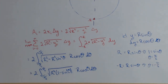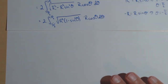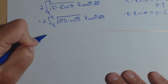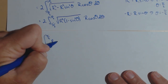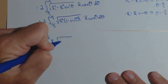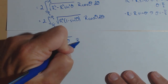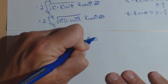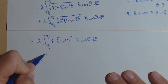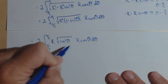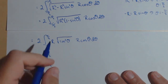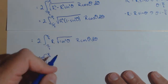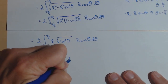Moving to a new sheet: we have 2 times the integral from negative pi over 2 to pi over 2. Pulling out r, the square root of 1 minus sine squared theta is the square root of cosine squared theta, which is cosine theta, times another r cosine theta d theta. So we have 2r squared times the integral from negative pi over 2 to pi over 2 of cosine squared theta d theta.